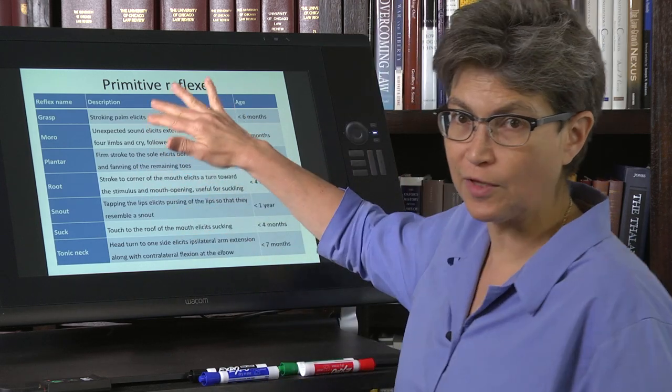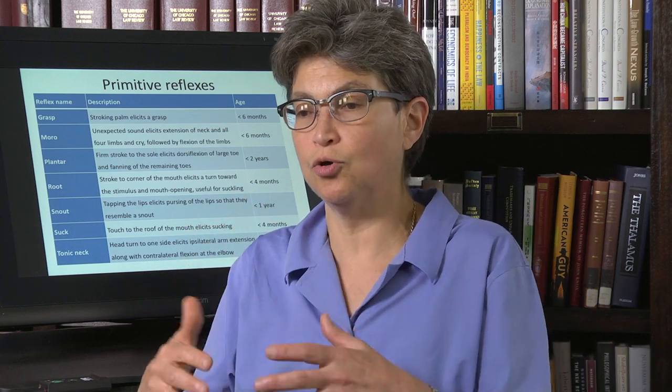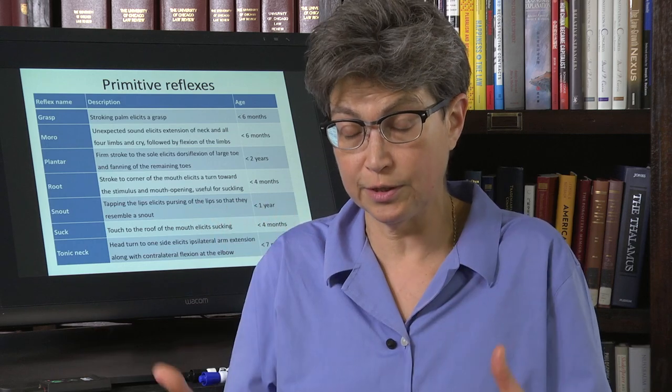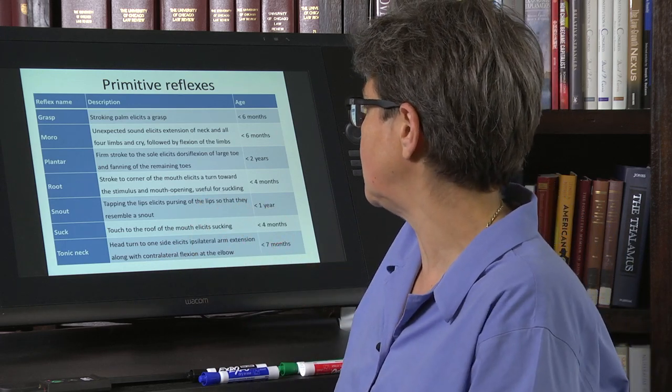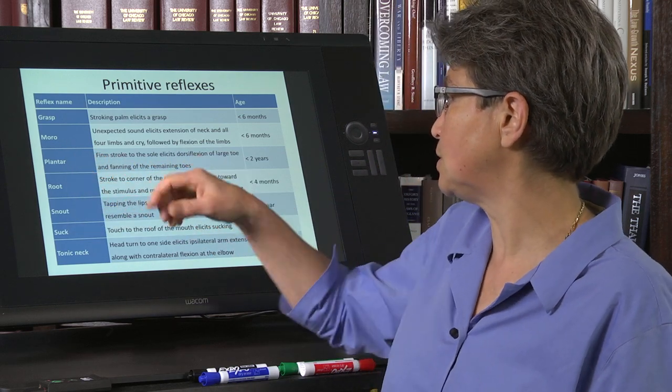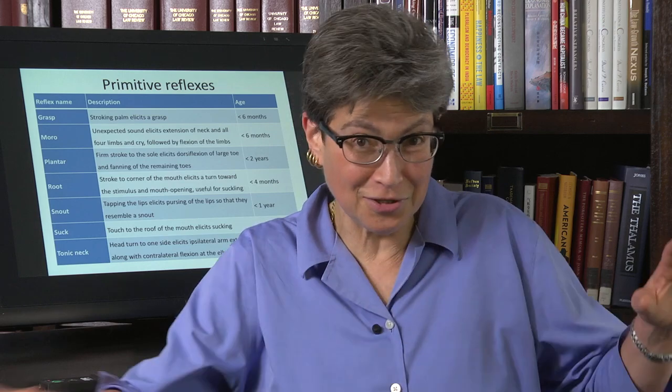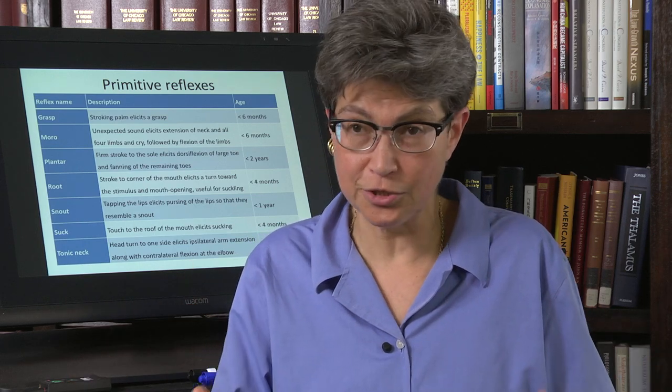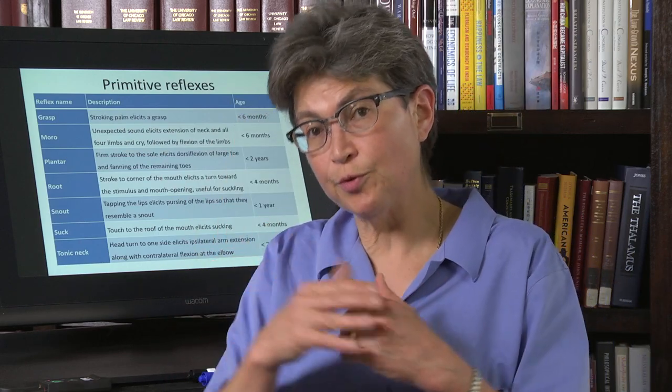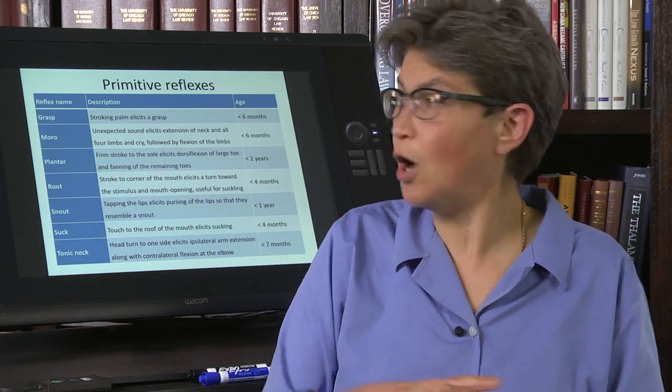Unless something goes wrong, they're suppressed. When something goes wrong, you can have a release of the primitive reflexes. One very important example of that is that if there is a lesion in motor control centers, descending motor control centers—we'll look at this again—lesions, let's say, in the corticospinal tract, then you can have the Babinski reflex, which is the plantar reflex. A firm stroke to the sole elicits a dorsiflexion of the large toe and fanning of the remaining toes. That happens normally for the first two years of life, and then it starts to get suppressed. So in a healthy adult there should be no Babinski reflex—there should be no Babinski sign, I should say, there should be no plantar reflex. But in an individual with a lesion in the corticospinal tract, that plantar reflex makes a recurring visit.